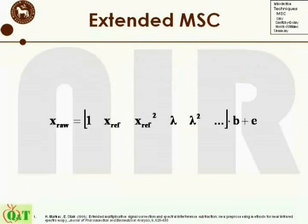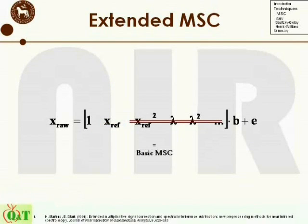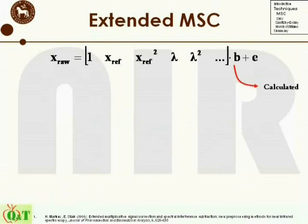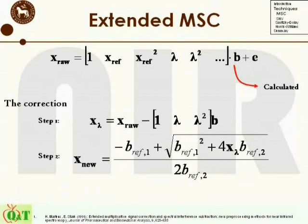With the expanded equation, it is straightforward to derive the detrend correction — simply removing the reference correction part — or to go back to basic MSC by removing all higher-order reference corrections and the wavelength correction. After finding the correction parameters, the actual correction is performed in two steps: first, the wavelength correction, then the reference correction. Adding higher-order reference correction may seem simple; however, a second-order reference correction requires solving a second-order equation, and third or higher-order equations require numerical analysis.